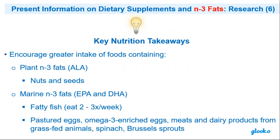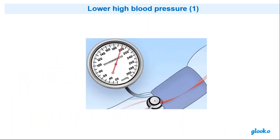N3 fatty acids are found in nuts and seeds, and of course in fish, eggs, and meat and dairy products. That's where we find them.